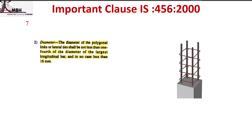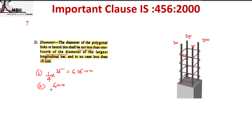Regarding the diameter of lateral ties, the diameter shall not be less than the greater of the following two conditions: first, one-fourth of the diameter of the largest longitudinal bar — for example, if the largest bar is 25 mm, then 25/4 = 6.25 mm; and second, 6 mm. So the diameter of lateral ties shall not be less than 6.25 mm in that case, meaning you would provide 8 mm.